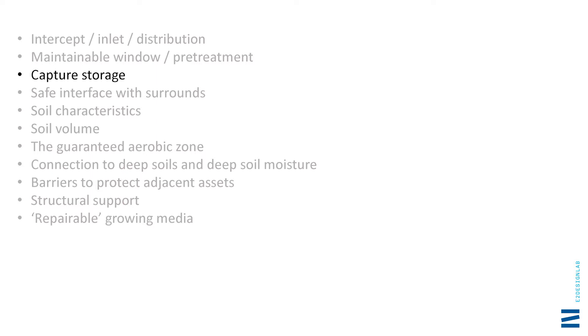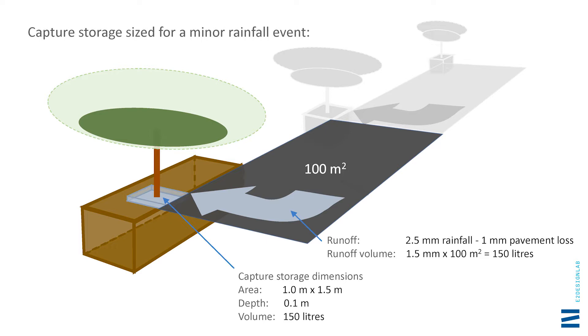Now, capture storage. I have my own rule of thumb for sizing. You've got a nasty long dry spell like we get in Melbourne in summer — weeks go by, then you get a flashy few millimetres of rainfall and you want to capture all of it. With two and a half mm of rain you lose the first millimetre to evaporation off the pavement. For a typical scenario of 15 metres between trees and pavement from crown to kerb, two and a half mm of rainfall gives you potentially 150 litres. So that capture storage volume should be aiming for a little less than a bathtub — if you can get that to the tree, you're probably doing well.